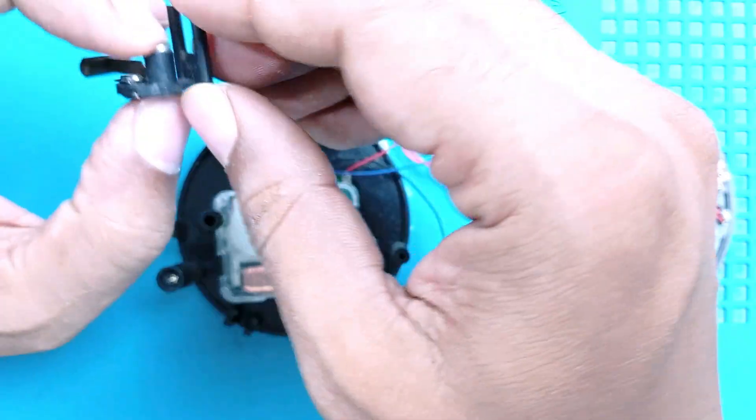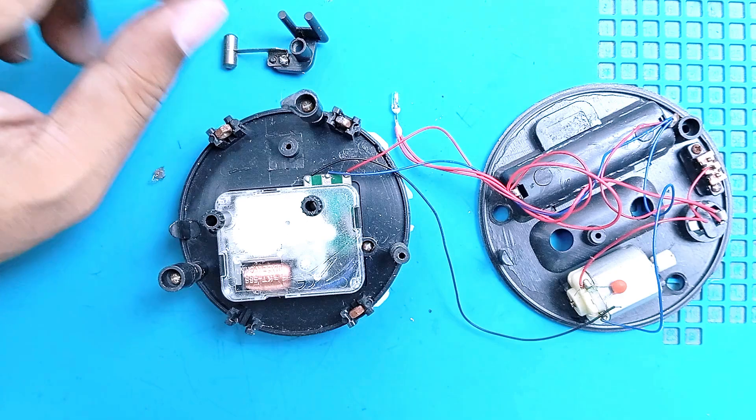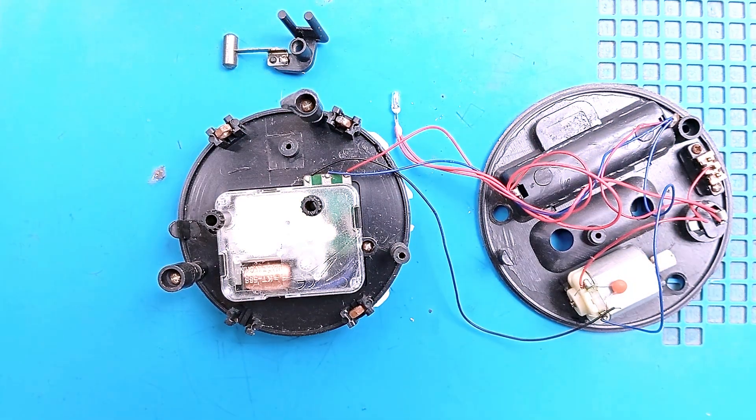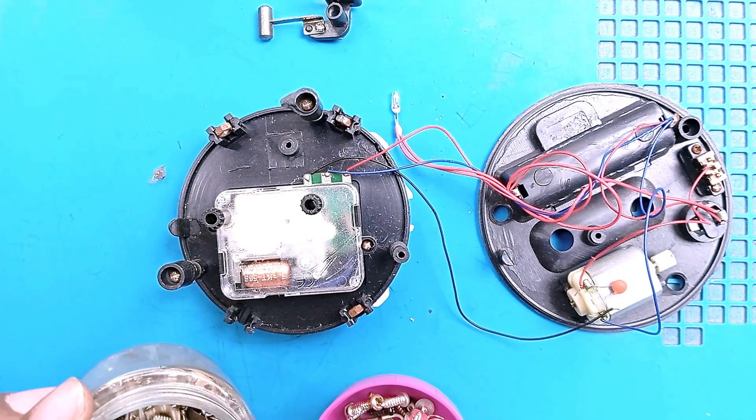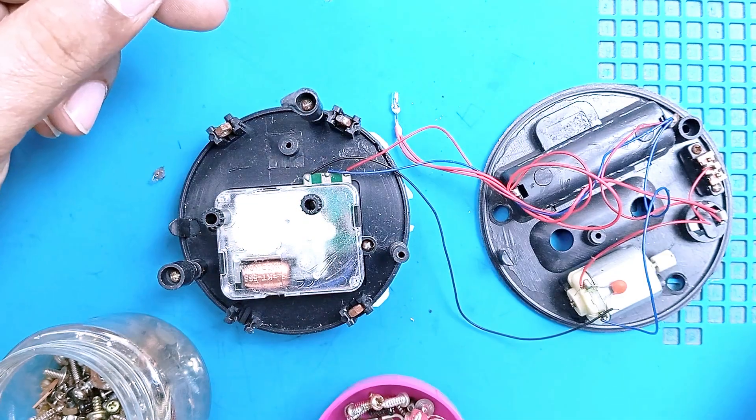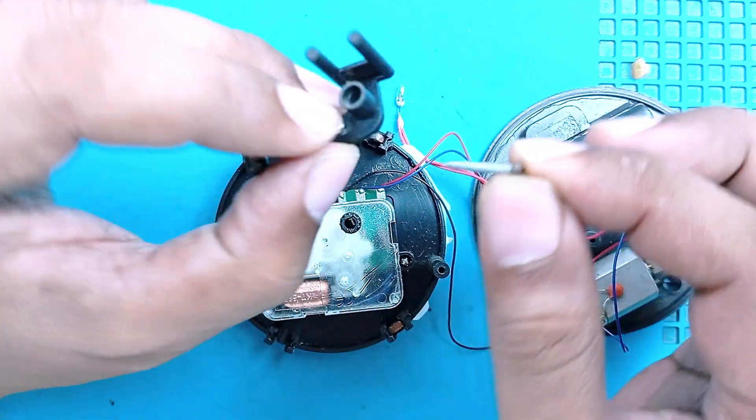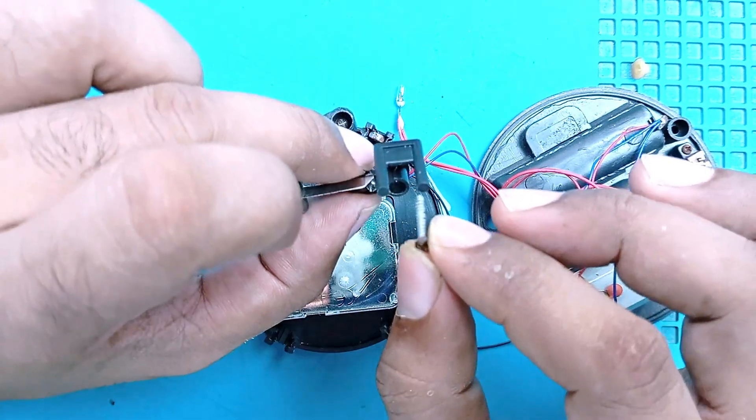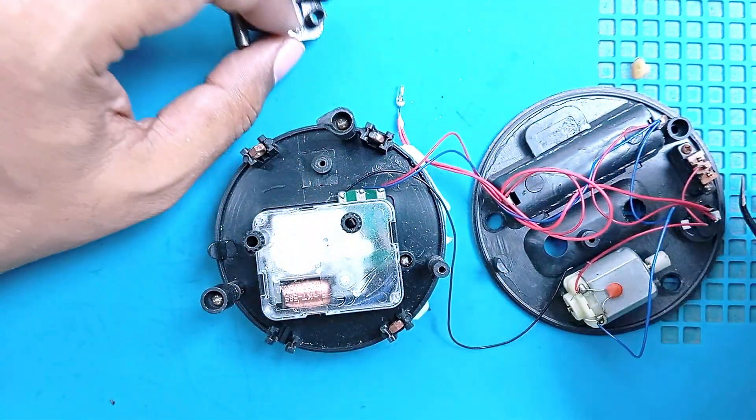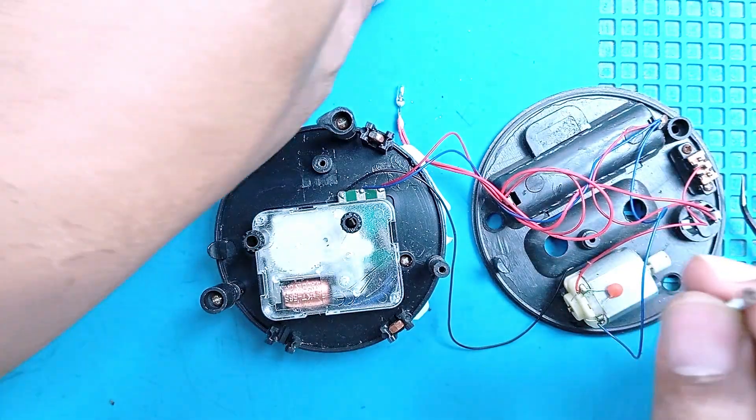Now I need a long screw, something like this, but it's short. We need longer than this. Let's find a perfect screw. It should be long and with a big head so it can hold this thing in place. Finally found a perfect screw for our project, but this screw head is small, so we need a washer. I'll use this plastic washer and it perfectly fits in our system.